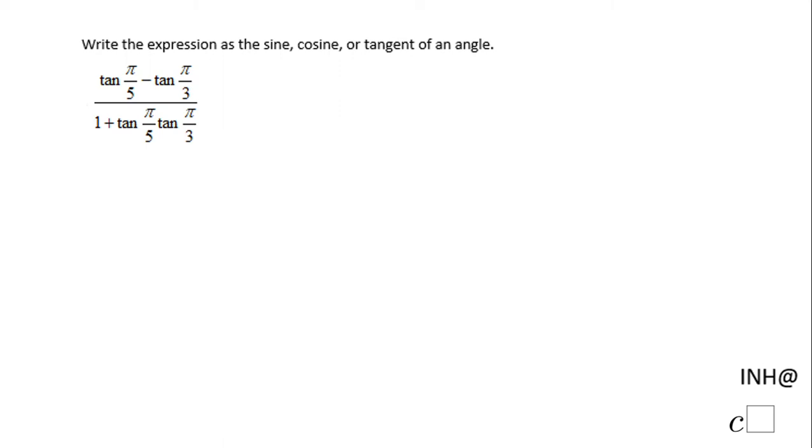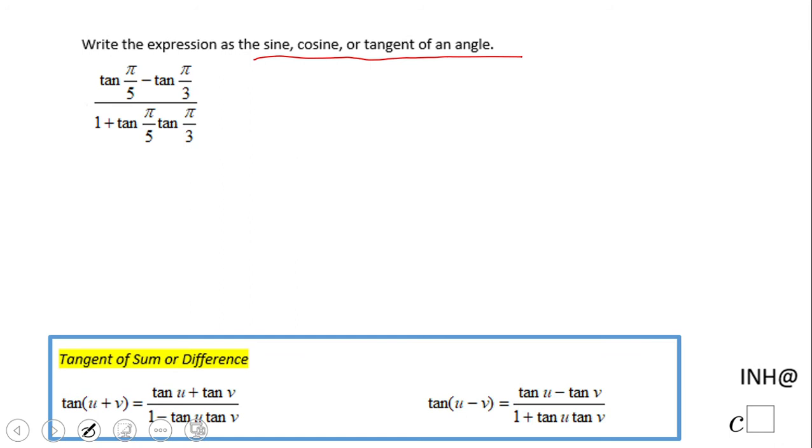Welcome back to C squared. In this example we're going to write this long expression in a short format: sine, cosine, or tangent. The question is which of these three, and notice there are only tangent there, so obviously it's going to be a tangent.